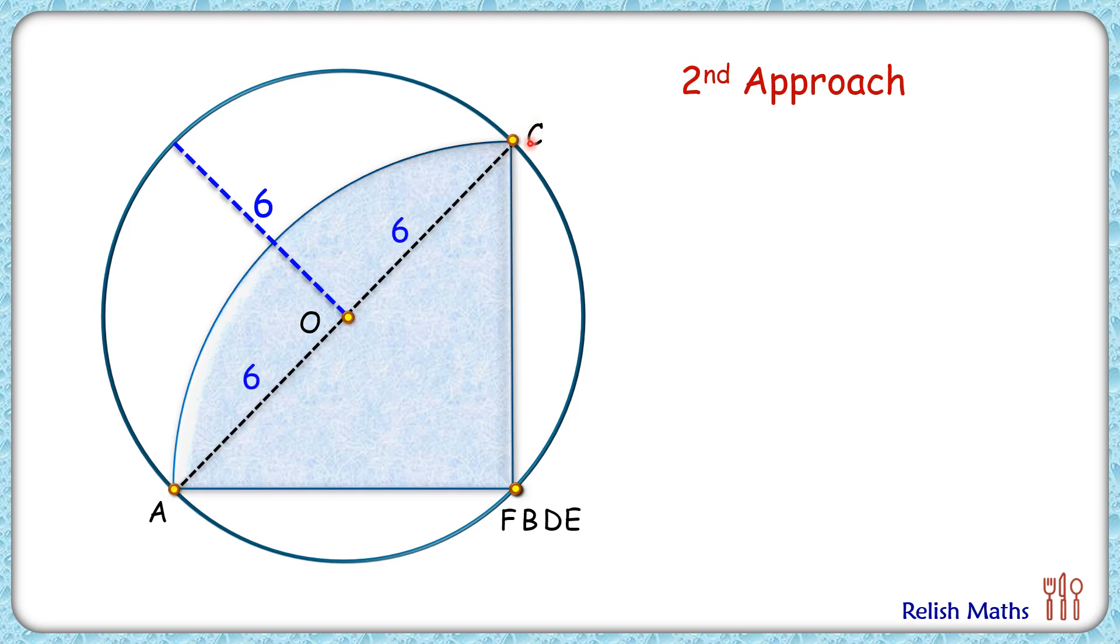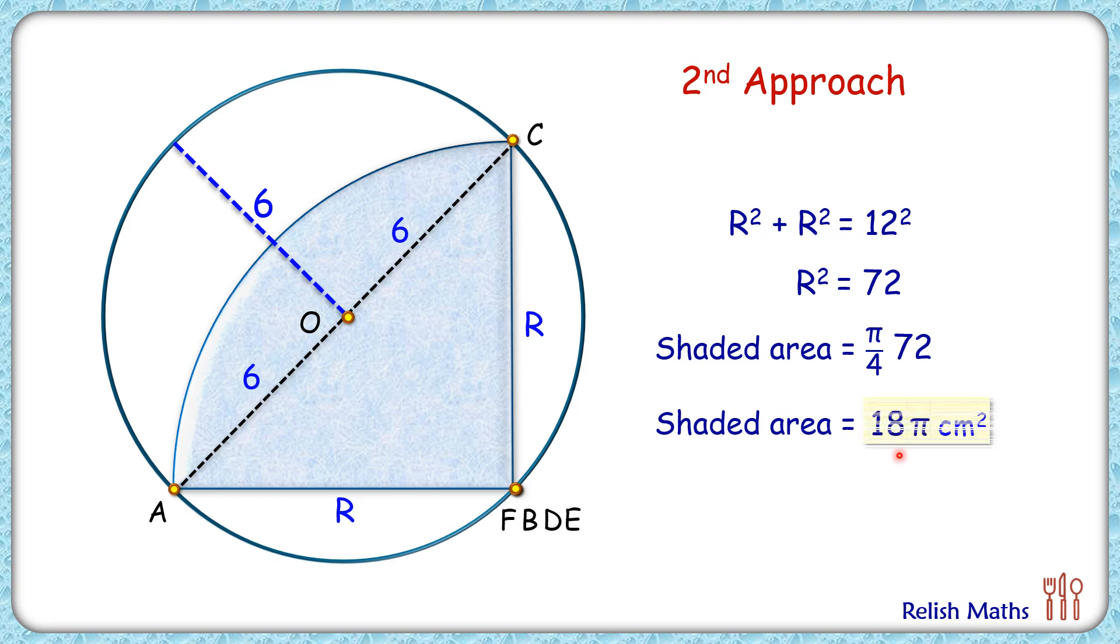The length AO and OC will be 6 centimeter. Applying Pythagoras theorem in this triangle ABC, we'll get R² + R² equals 12². Solving it, we'll get value of R² as 72. Now area of this shaded region is the area of the quadrant, which is π/4 times R². Putting value of R² as 72 and solving it, we get area of shaded region as 18π centimeter square and that's our answer.